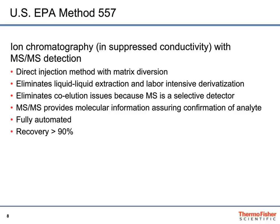A little bit more about EPA method 557: it is an ion chromatography method in suppressed conductivity mode using MS-MS detection. This is a direct method with a matrix diversion of the high concentrations of chloride, sulfate, and carbonate in the sample matrix. It eliminates the difficulties of sample prep by eliminating liquid-liquid extraction and any derivatization. It also eliminates co-elution because the mass spec is a selective detector. MS-MS also provides molecular information, which confirms the analyte of interest. This method is fully automated, and recoveries are typically greater than 90%, well within the EPA requirements.